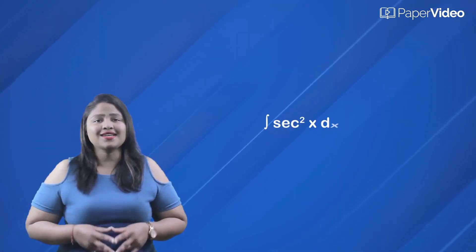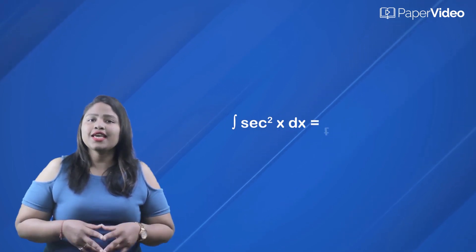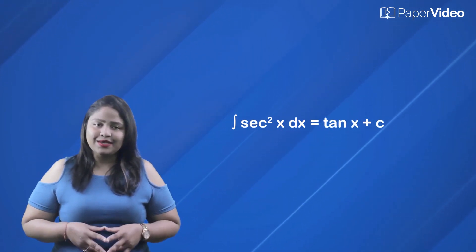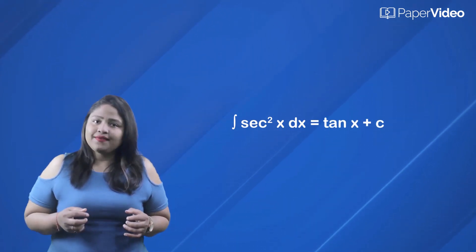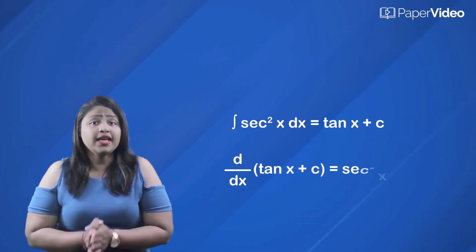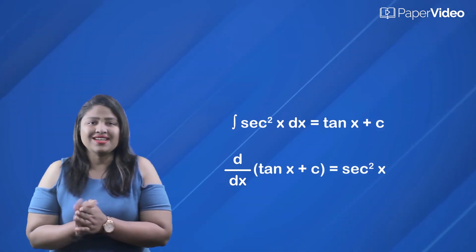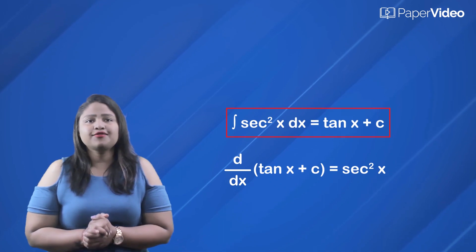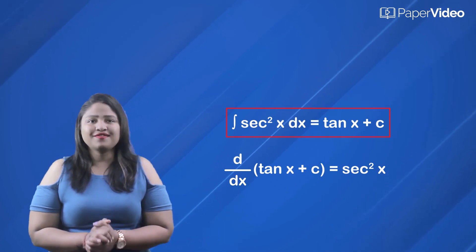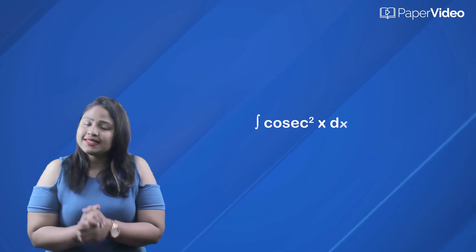Next, we have the integral of sec squared x dx. This integral is equal to tan x plus c. And we know that if we differentiate tan x plus c, we get sec squared x. Therefore, this standard formula is verified.